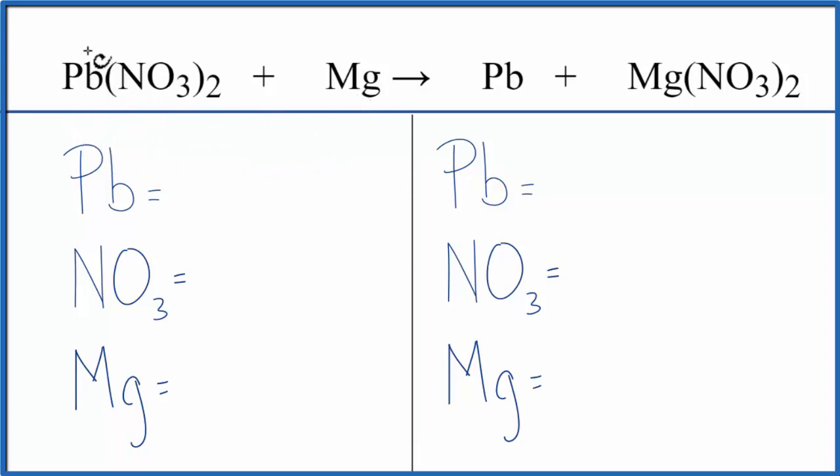Let's count the atoms up. We have 1 lead, and then NO3, that's a polyatomic ion called the nitrate ion. In this chemical reaction, it stays together. We have an NO3 here and then again here. So we're going to call this just 1 thing, the nitrate ion. We have 1 of them times 2, that gives us 2 nitrates.